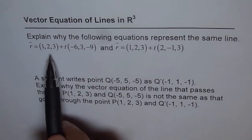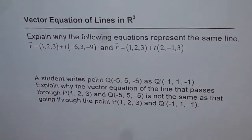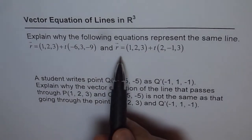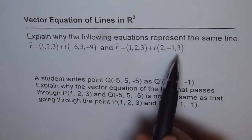The equation of the line is (1, 2, 3) plus t times (-6, 3, -9), and r equals (1, 2, 3) plus t times (2, -1, 3).